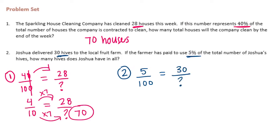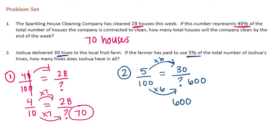We don't need to reduce this because we can do 5 times 6 equals 30, so 100 times 6 would be 600. So Joshua has a total of 600 hives in all.